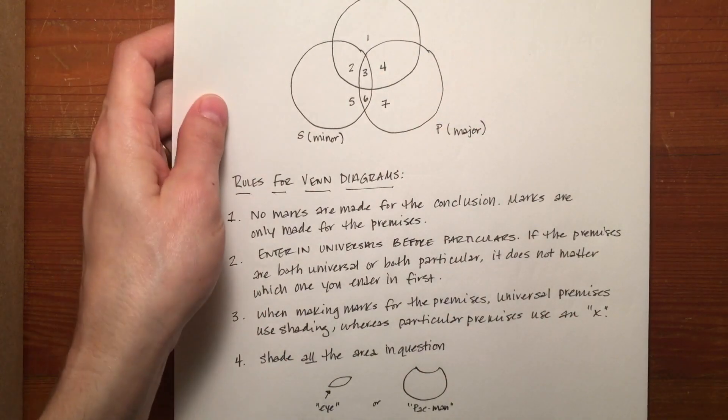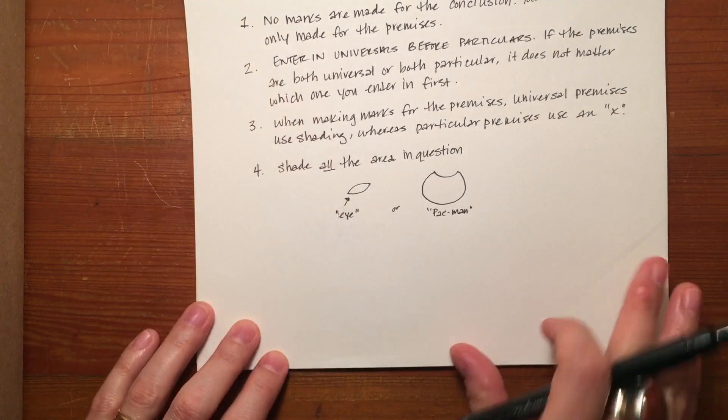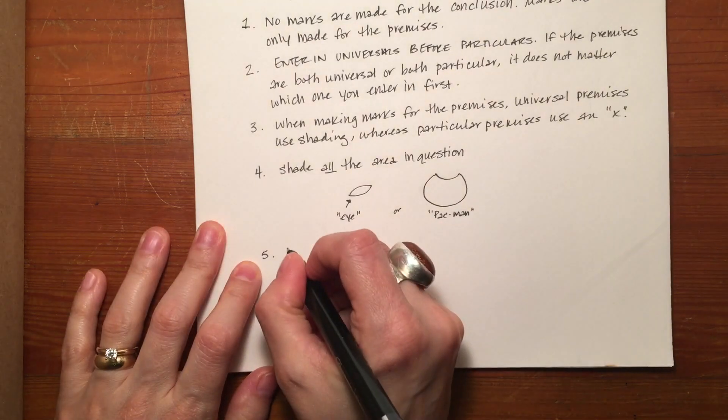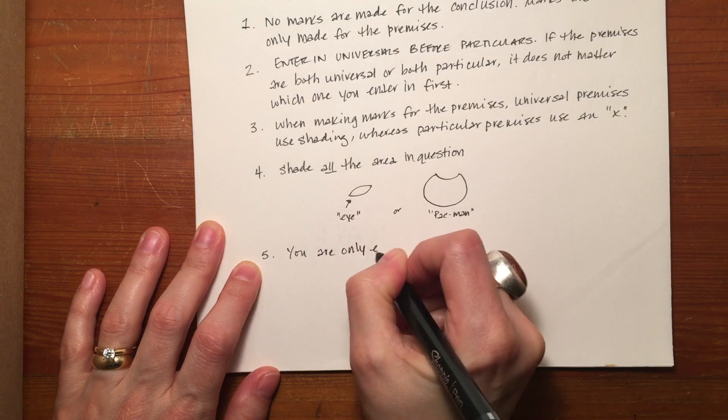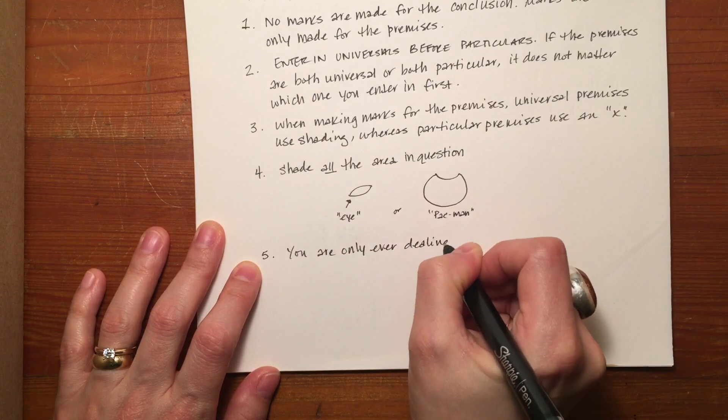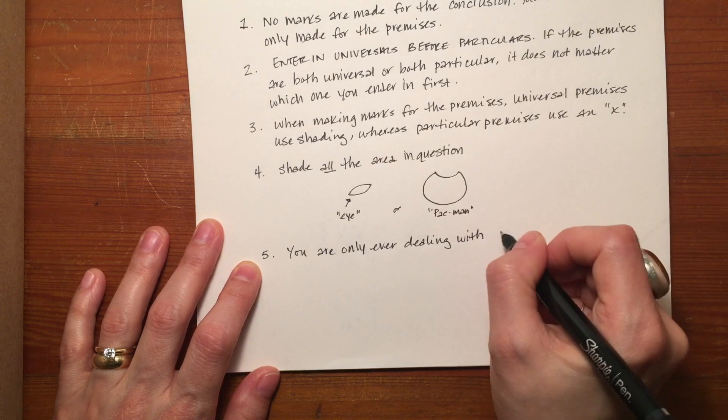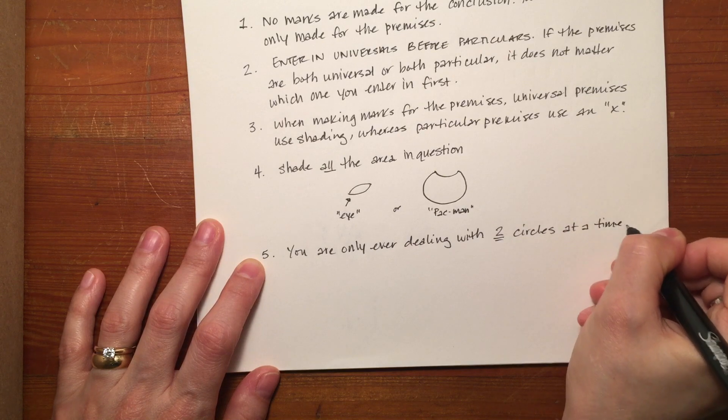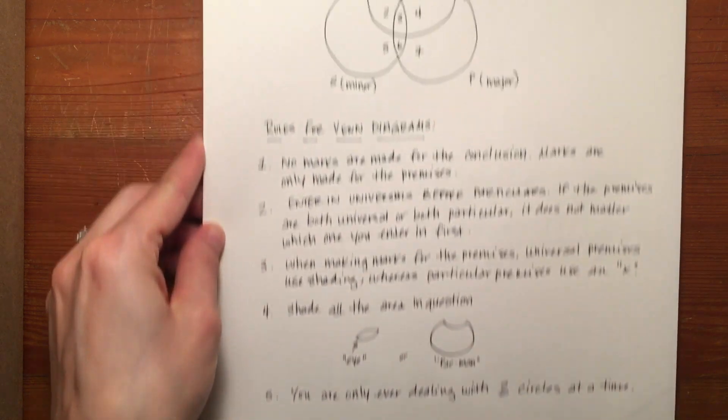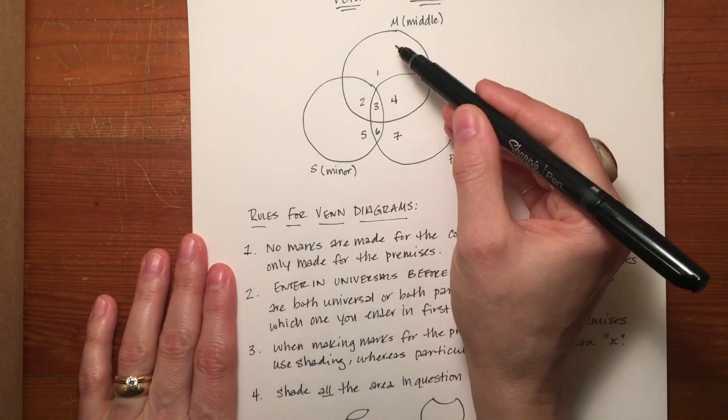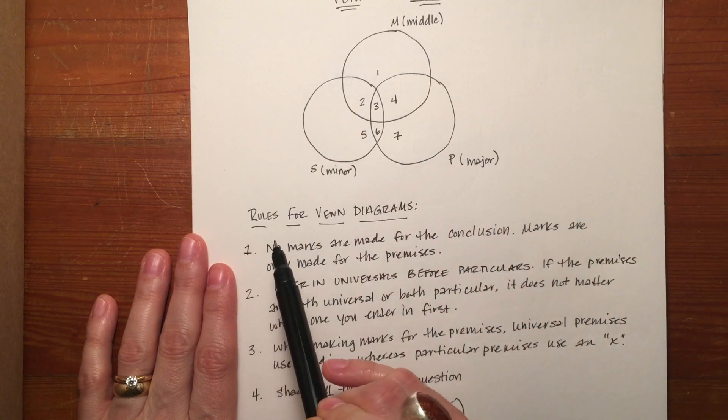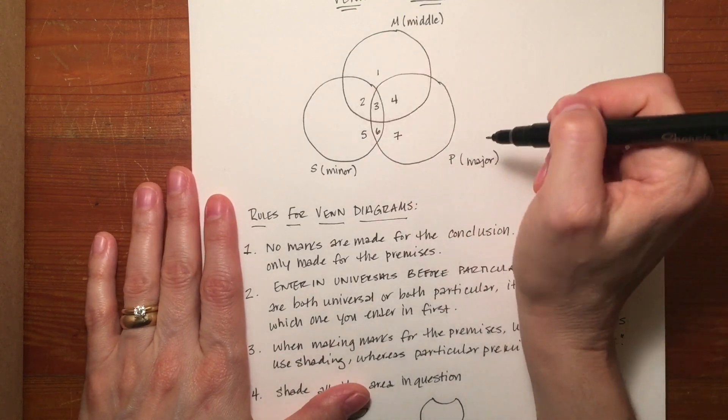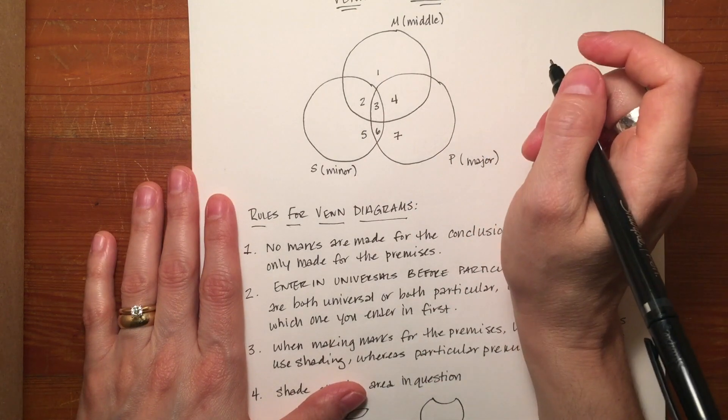Because another rule, before we get back to shading everything in question, is that you're only ever dealing with two circles at a time. So you're only ever going to be looking at M and S, or M and P, or S and P, or P and S. So you're only ever dealing with two at a time, you ignore that third circle, and I'll elaborate on that in another video.